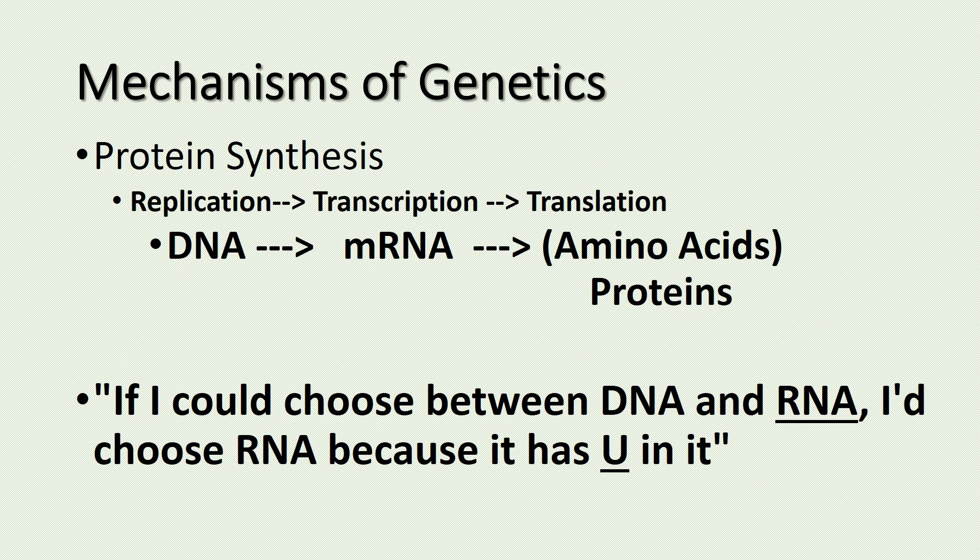DNA is the blueprint of life and carries the genetic code that codes for all of our traits. These traits are then expressed by proteins that are made via protein synthesis. When DNA is turned into mRNA, this is called transcription and happens in the nucleus. When the mRNA is translated into amino acids at the ribosome, this is called translation. Remember the difference between DNA and RNA: choose RNA because it has U in it.